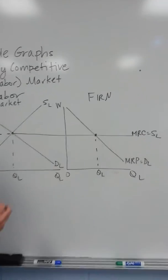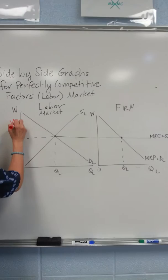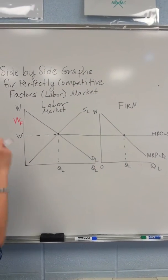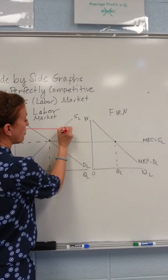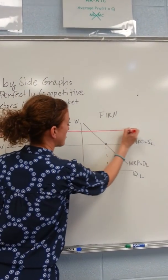In the labor market, a wage floor, whether it be a minimum wage or a union negotiated wage, will be a wage above the equilibrium.